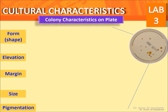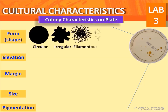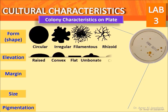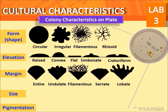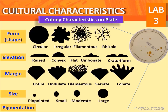Colony characteristics on a plate include: form — circular, irregular, filamentous, or rhizoid; elevation — raised, convex, flat, umbonate, or crateriform; and margin — entire, undulate or wavy, indented, filamentous, serrate (tooth-like), or lobate with marked indentation.